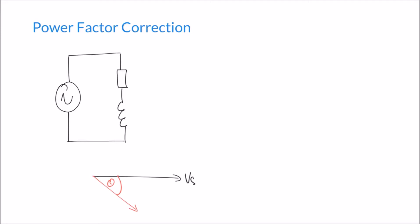This is a big problem because reactive power, which is dissipated by the inductor, is what we can think of as wasted power, whereas real power — the real component of power dissipated by a resistor — is what we can think of as useful power. This is a big problem in industry where we have large motors potentially dissipating a lot of reactive power as well as doing useful work with real power. One of the things we can do is correct for a lagging power factor by introducing a capacitor into the circuit.